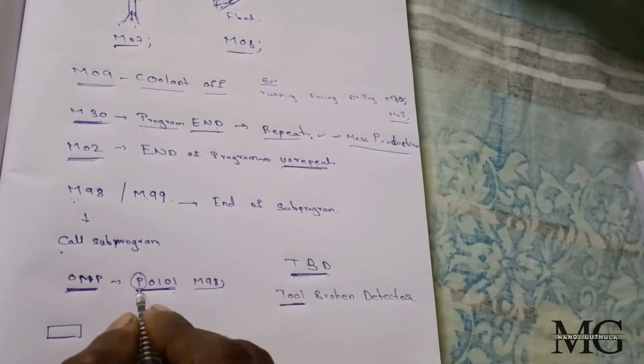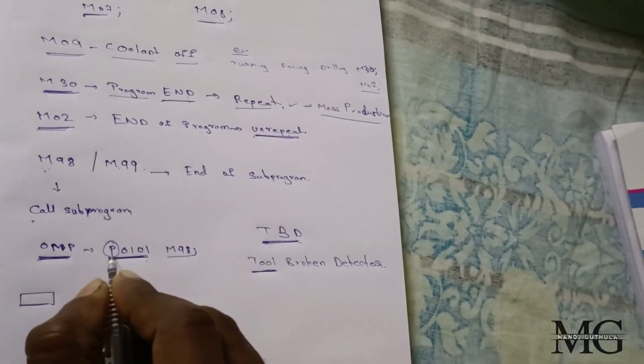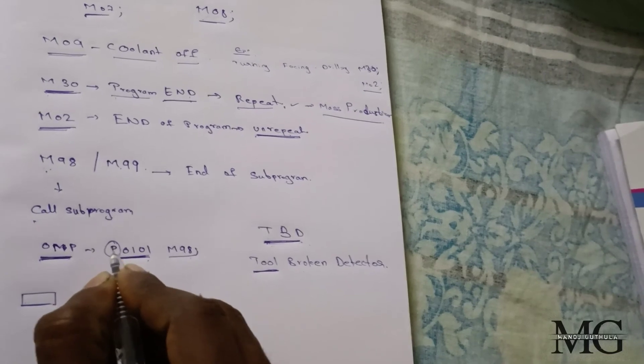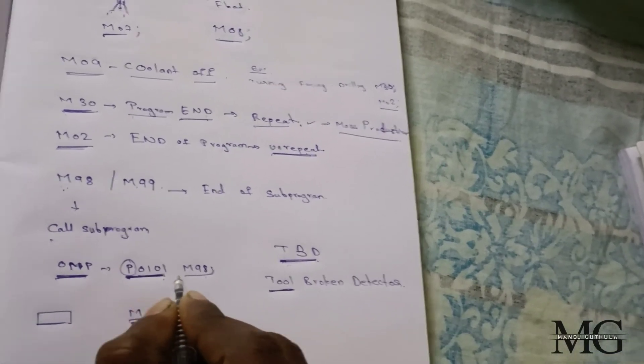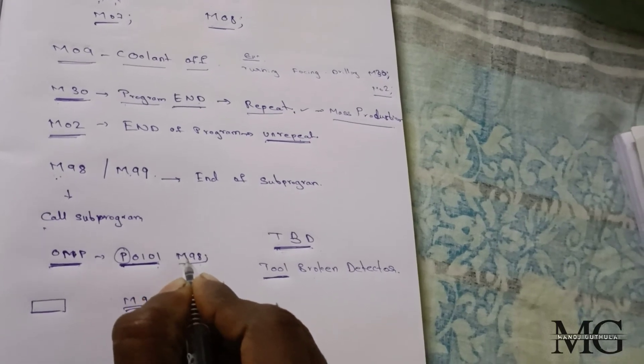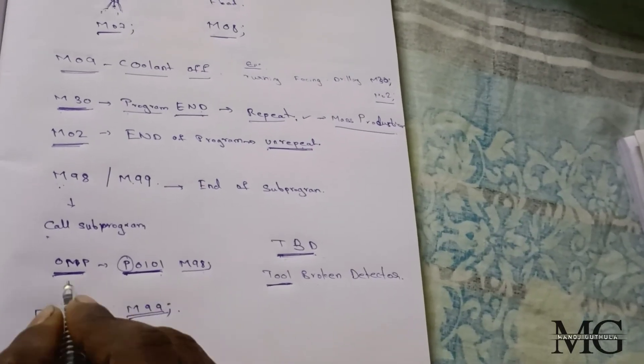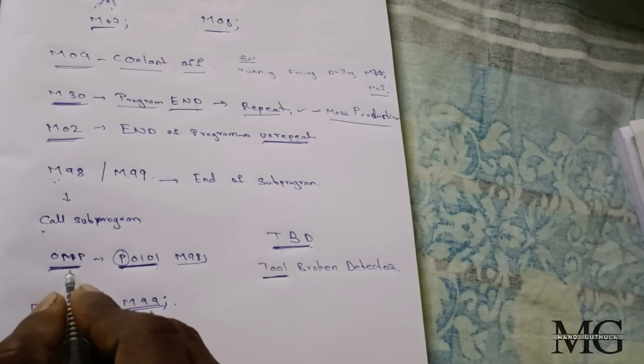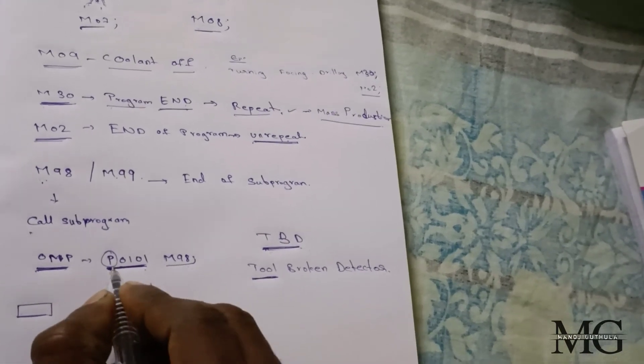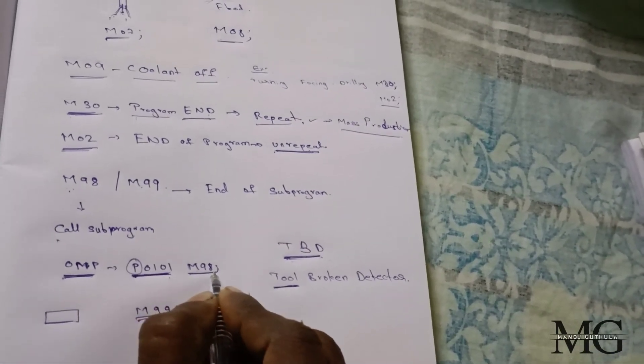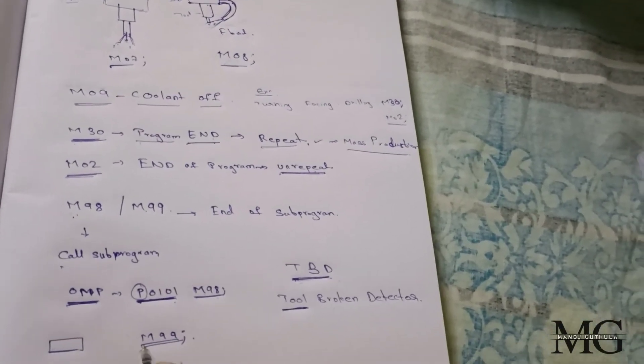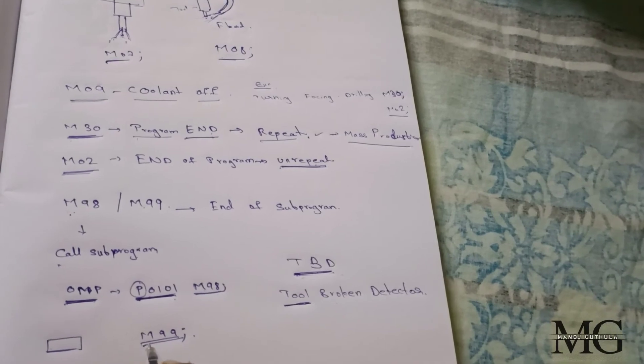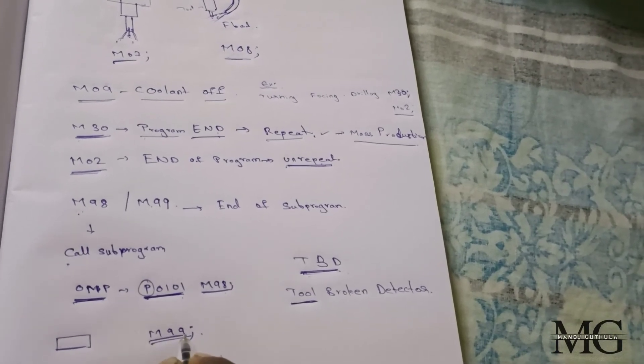These sub-programs are kept as with indication of variable P and some number. Later, when we use M98 to call the sub-programs, after ending of sub-program, it should be ended and continued with the main program. So we use at the end of this sub-program, M99 is used.